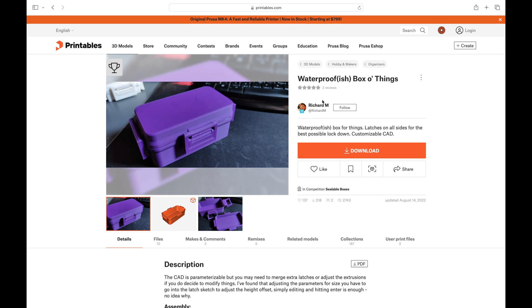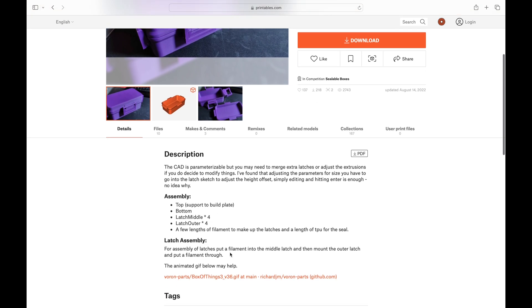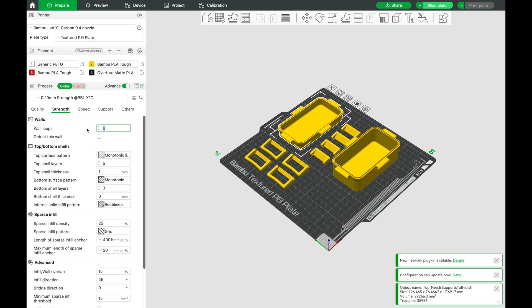The first design we'll be taking a look at we found over on printables. The designer Richard says it's waterproof-ish but what really piqued my interest is that the box is 100% 3D printed. There's no metal hardware used on the latches, just pieces of filament.